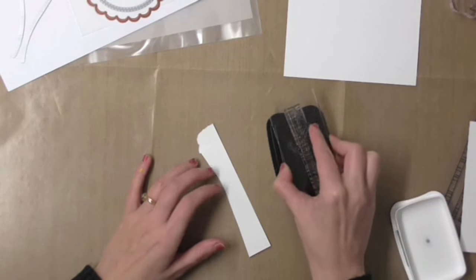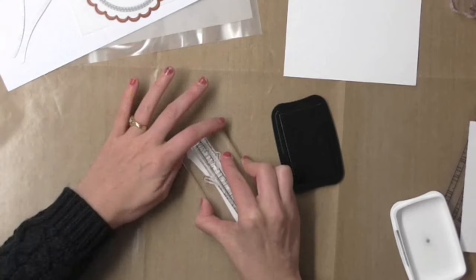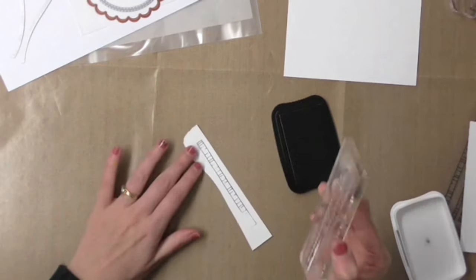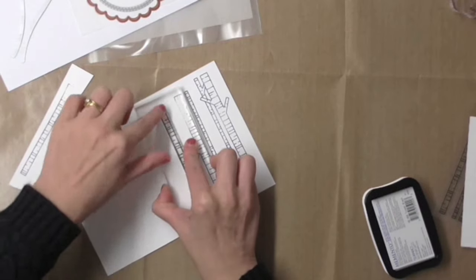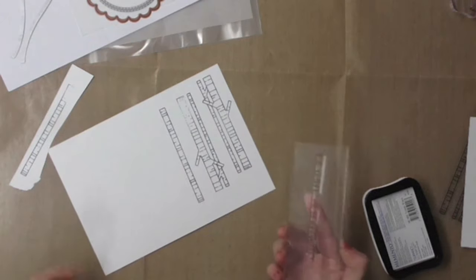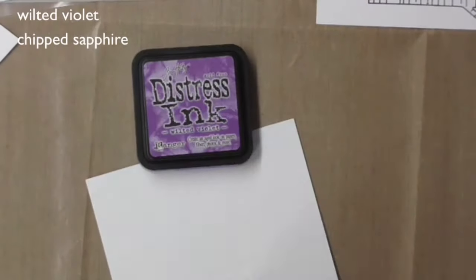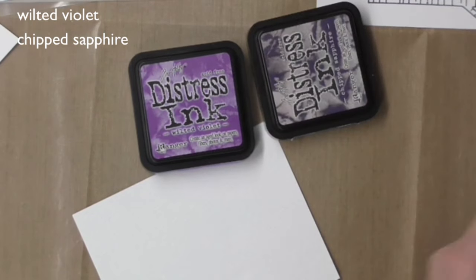So I'm stamping this with Tuxedo Black ink from Memento onto some Neenah Solar White cardstock and I'm going to be doing some very quick Copic coloring on these small images. They're going to be very small so I'm not going to spend a lot of time doing it but I will show you the colors.